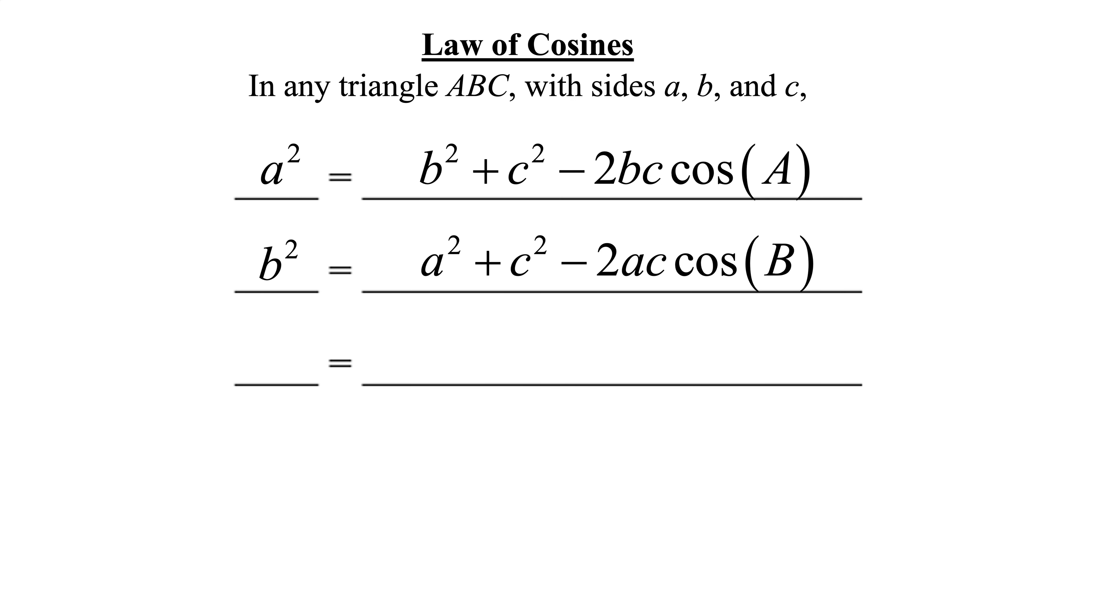Well, we'll do the same thing. We want angle C. That means B squared has to become C squared. So now, where I see my C squareds, or my C, they become B's. And my C squared is over here, and my angle B becomes C.